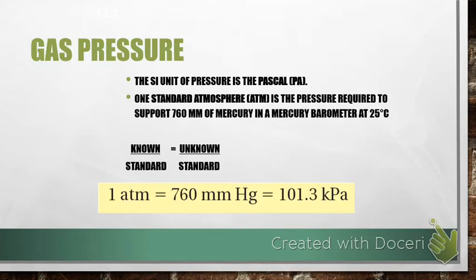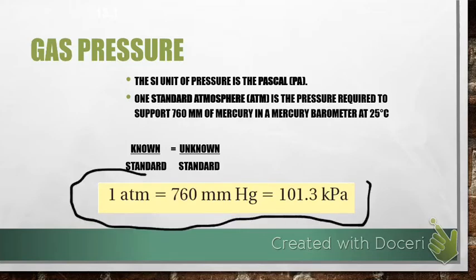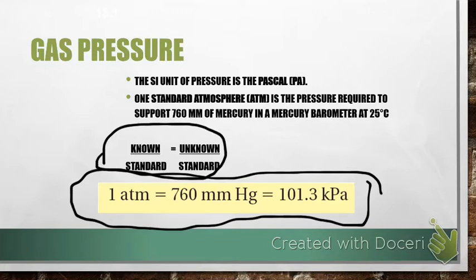When we talk about gas pressure in chemistry, the SI unit that we're going to use is the Pascal. One standard atmosphere is the same as 760 millimeters of mercury, which is the same as 101.3 kilopascals. So it's these standards that we are going to use to convert from one unit to the other. This is the formula that we'll use. Known over our standard equals unknown over our standard. It's just a simple ratio, just like a mole ratio. It's these that we're going to plug in to convert from one type of gas pressure unit to the other.